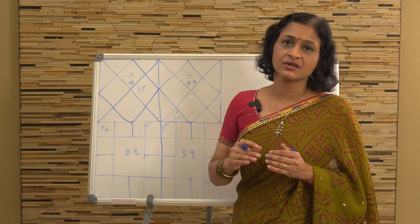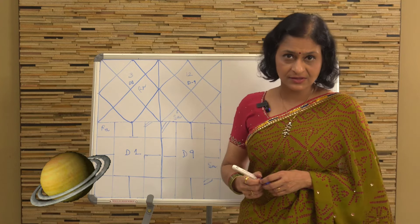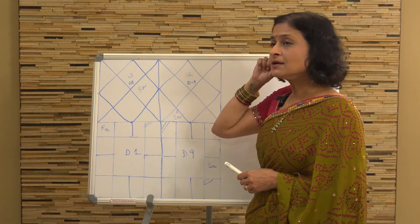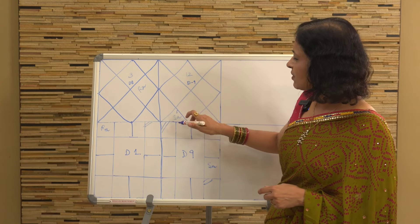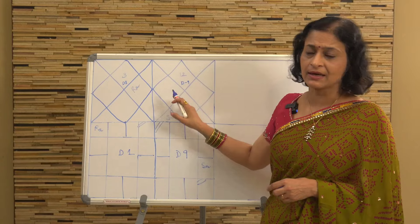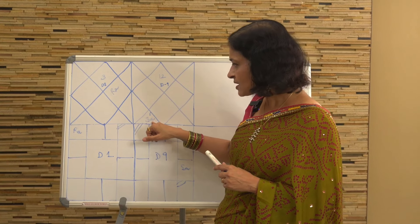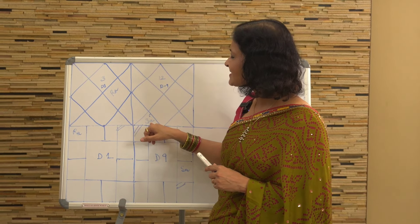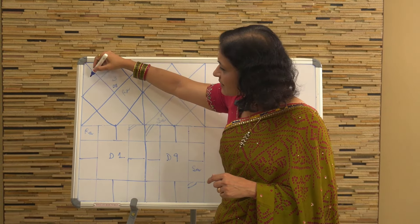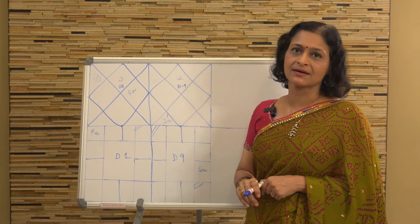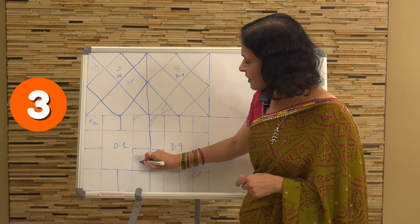Rahu is transiting through the nakshatra of Saturn, and for that we need to check out where Saturn is placed in a person's chart. Say if Saturn is placed in the sign of Leo in a person's D9 chart, we take that Saturn and plot it in the D1 chart in the sign of Leo. The sign of Leo here is falling in the third house, and we superimpose Saturn in the third house.